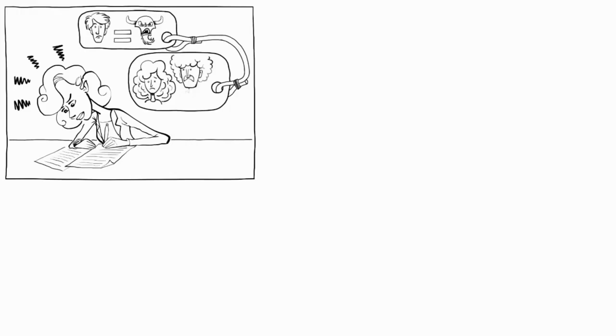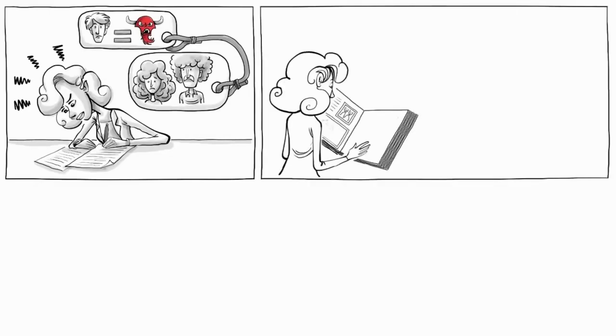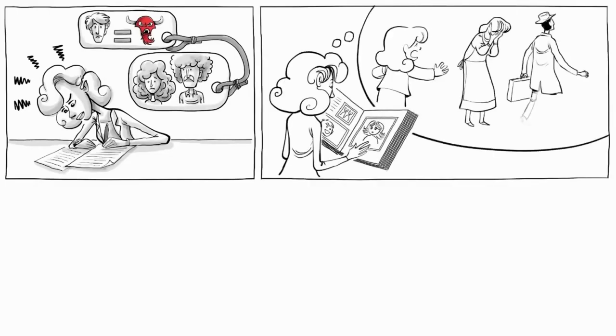Eva then accuses her parents of making her the victim of their broken relationship. This is important because this way she can retrace her negative pattern back to her parents.